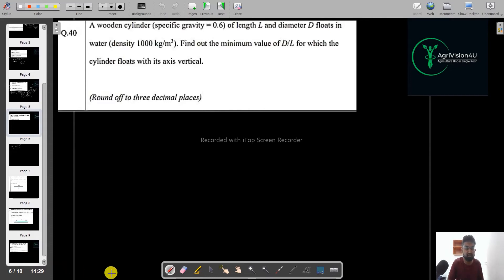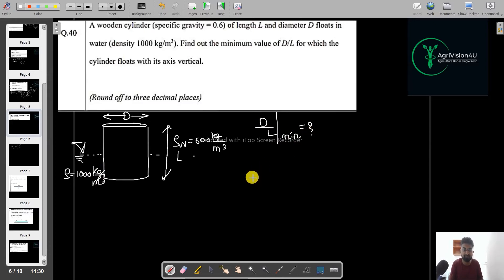So now let's move to the next question. So in this question, it is written that a wooden cylinder, a wooden cylinder of gravity 0.6. Here it is given that specific gravity, so I can write it as directly. The row for the wooden cylinder will be equal to 600 kg per meter cube of length L. So it has length of L and diameter D. It floats in a water, so it is floating in a water of density.